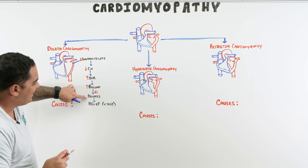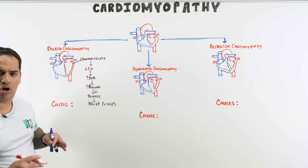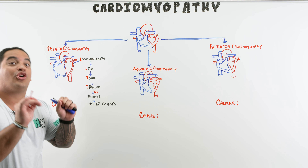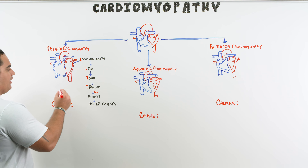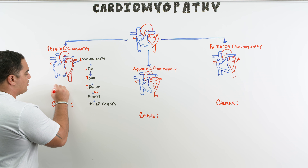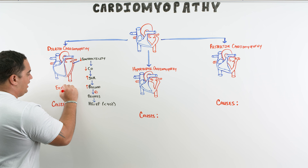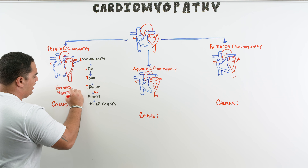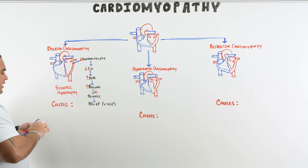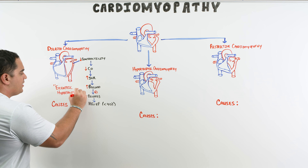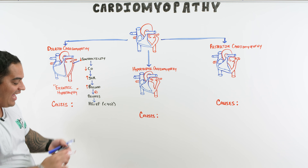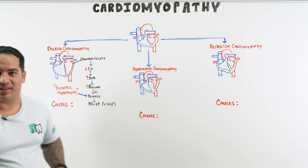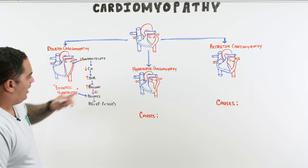The dilation process uses a term called eccentric hypertrophy — sarcomeres are added in series, which is what triggers the dilation. This is the pathophysiological basis of the ventricular dilation seen in dilated cardiomyopathy.